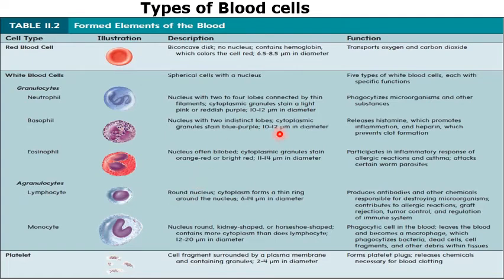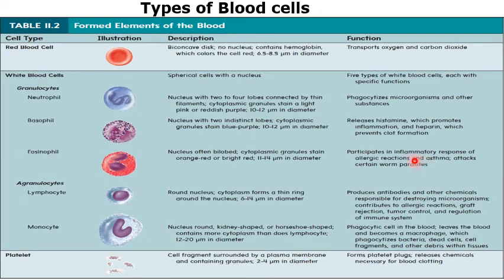Basophils are 10 to 12 micrometers in diameter, have cytoplasmic granules and indistinct lobes, and release histamine which promotes inflammation — when there is an infection, inflammation may be caused by basophils. Eosinophils are 11 to 14 micrometers in diameter and contain a bi-lobed nucleus. Their granules stain orange, and their count increases whenever there is an allergic reaction.